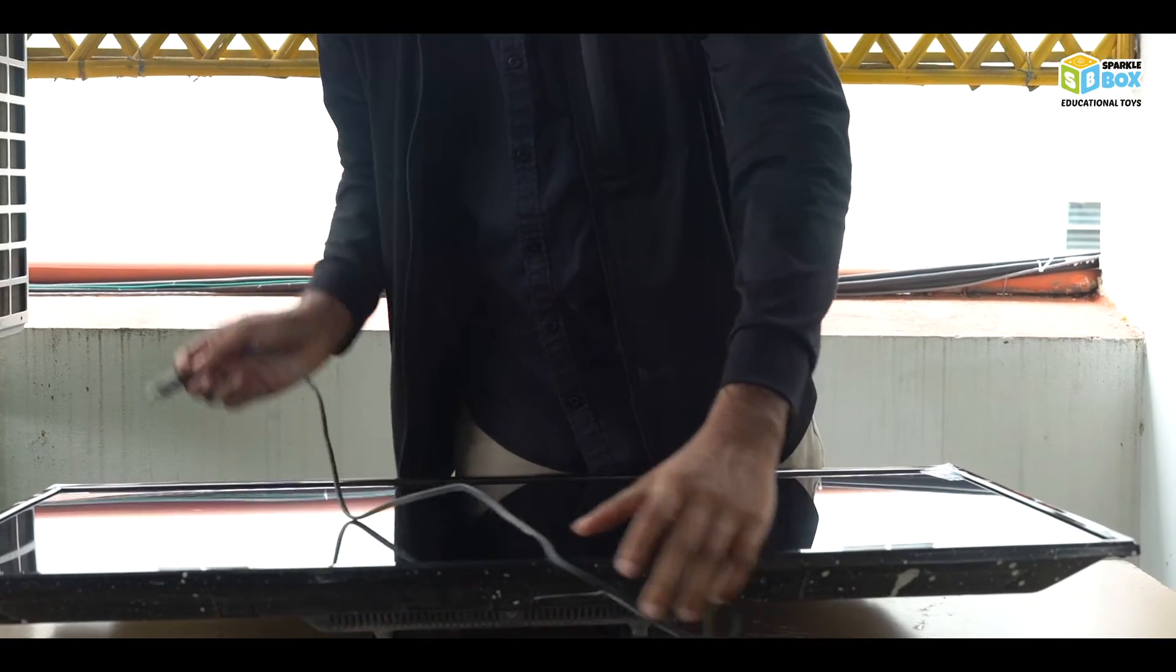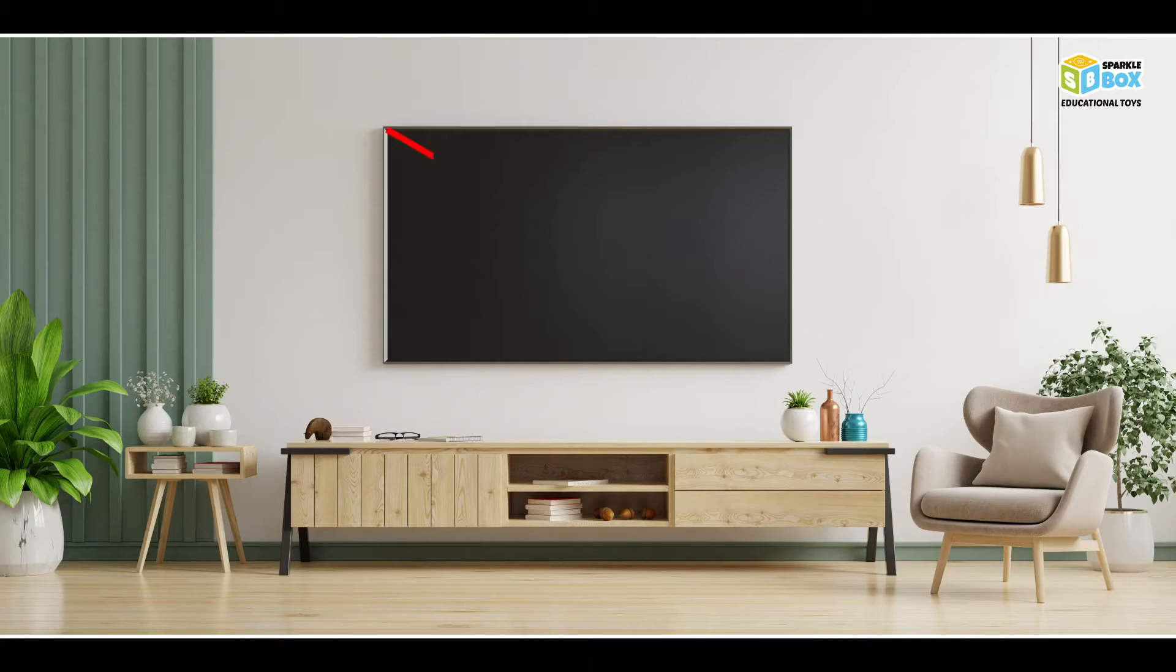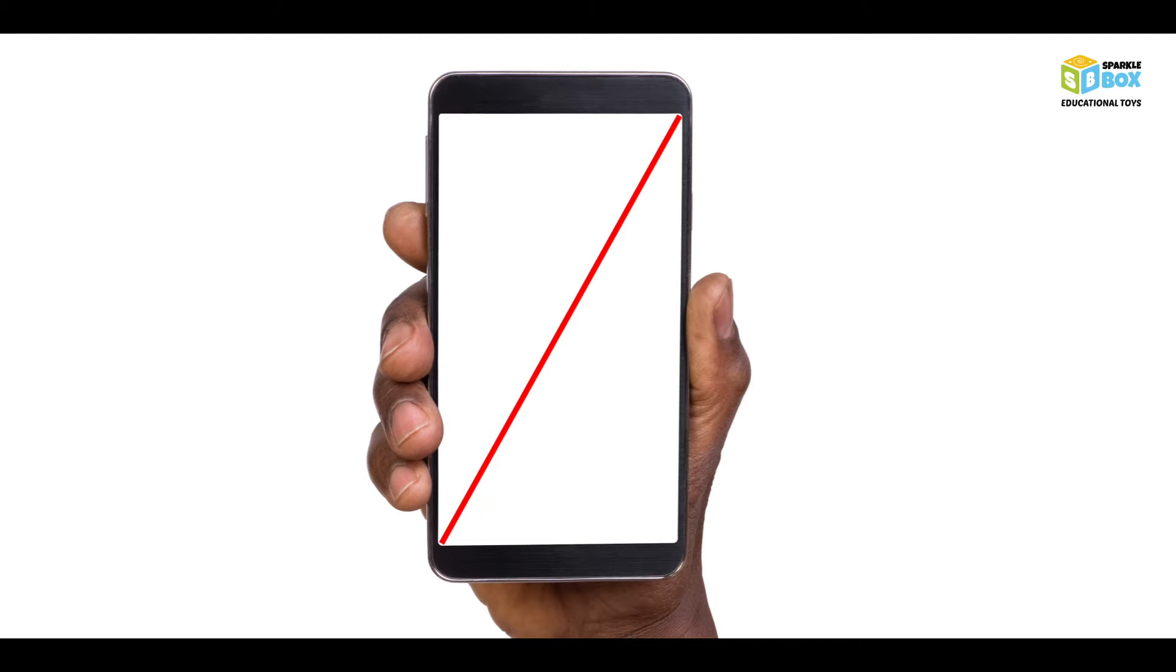First we need to measure the size of the screen. Here we are using a 40 inch TV screen measured diagonally. You can use any screen available to you, even your mobile phone.